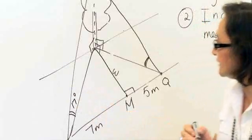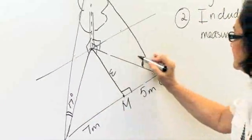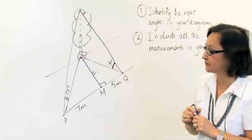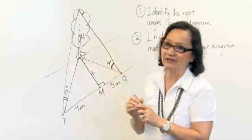17 degrees is the angle of elevation of the top of the tree from P. 19 degrees is the angle of elevation of the top of the tree from Q. The height of the tree we do not know, so we let it be H.